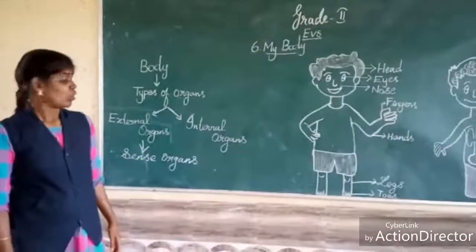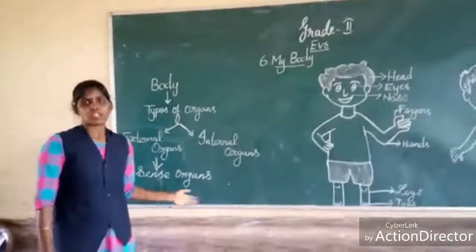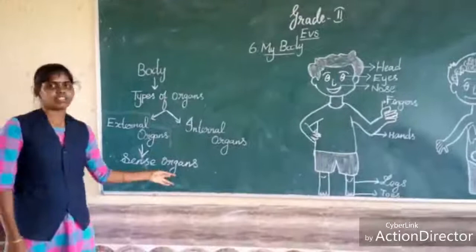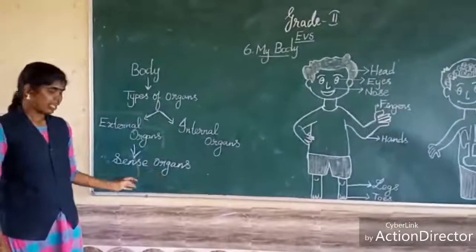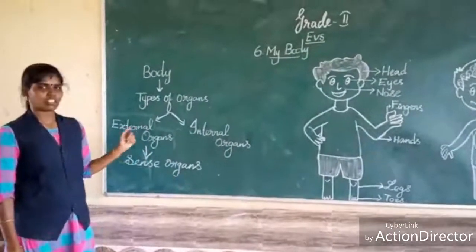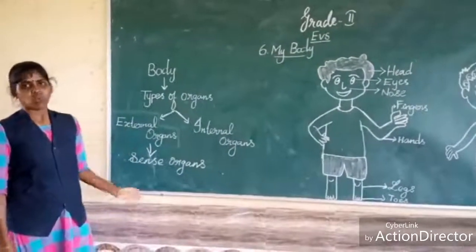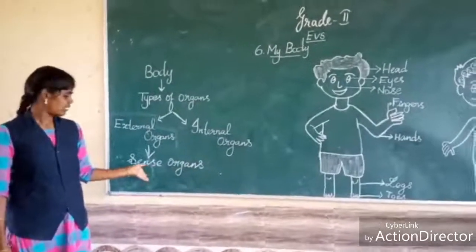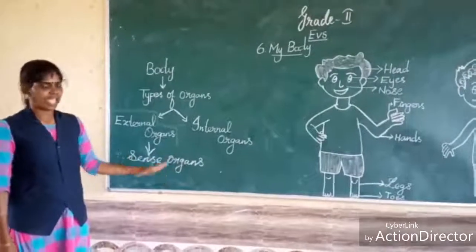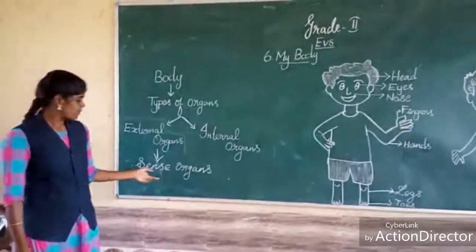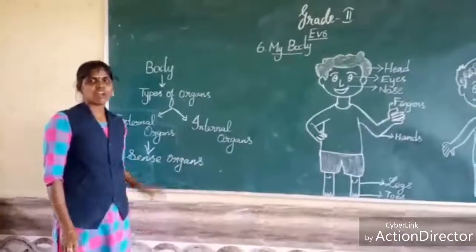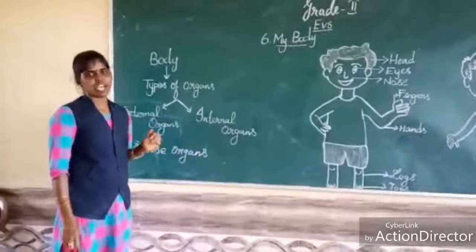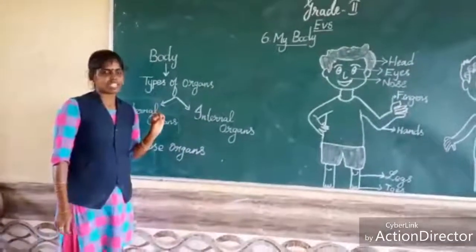And one more type of organ we also have. That is sense organ. Sense organ is related to the external organs, because sense organs also we can see. We have five sense organs.